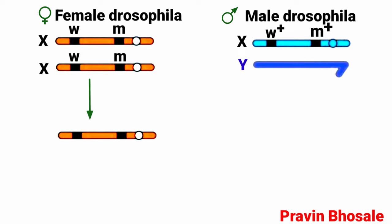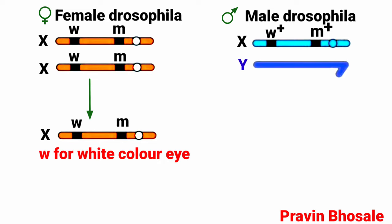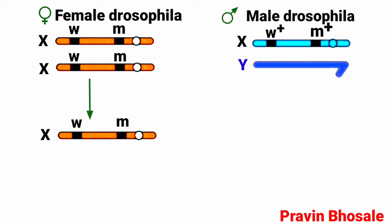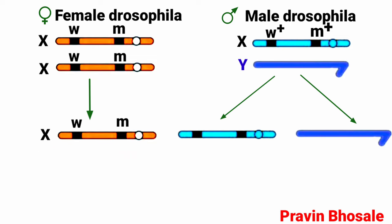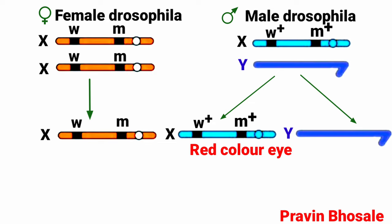The female produces one type of egg having an X chromosome with genes small w and small m — w for white color eye and m for miniature wing. The male produces two types of sperm: one with X chromosome having w plus and m plus (w plus for red color eye and m plus for normal wing), and another with Y chromosome having no genes.